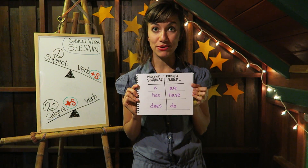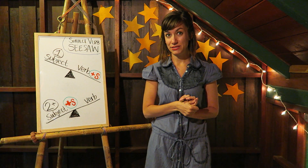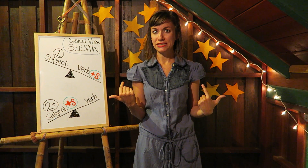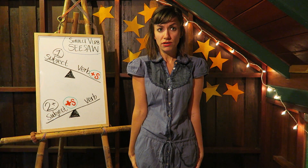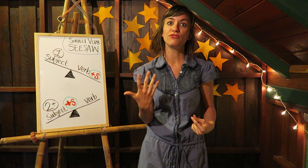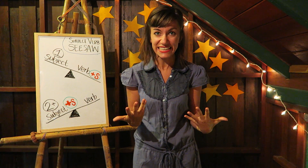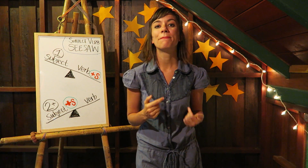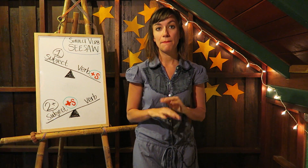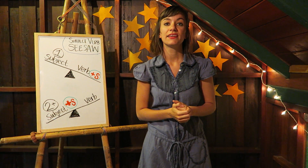Exception number three: personal pronouns. 'I' and 'you' are personal pronouns and are singular subjects — I am just one, you are just one. But 'I' and 'you' need plural verbs. For example: 'I eat cupcakes,' not 'I eats cupcakes.' 'You are my best friend,' not 'You is my best friend.' Remember these three exceptions.